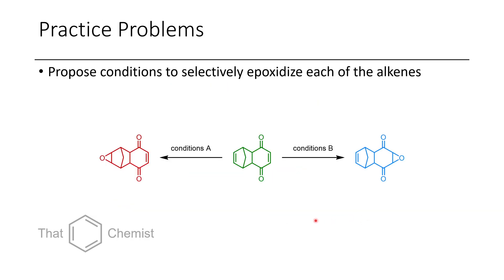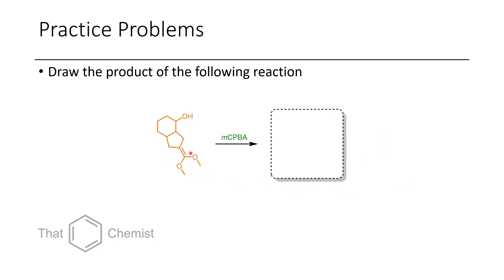I'd like to assign two practice problems for this lecture. In the first problem, show conditions that would give you the epoxide on the left, and also propose conditions that would afford the epoxide on the right. Using our knowledge of different epoxidation methods, we can convert one compound into two different useful building blocks — this is why we care about understanding reaction mechanisms. In the next problem, we take this alkene and treat it with MCPBA. Consider whether it might react with the alcohol or the alkene, draw what forms, and hopefully it's not too difficult. I hope this has been a useful lecture on epoxidation reactions of electron-poor and electron-rich olefins. If you have any comments or questions, please leave them below, and I hope you have a great day. Thank you.